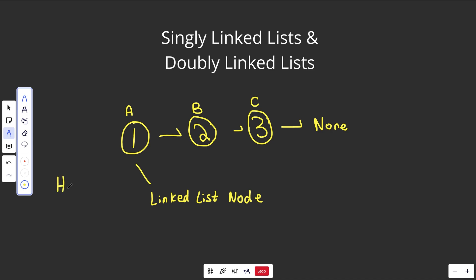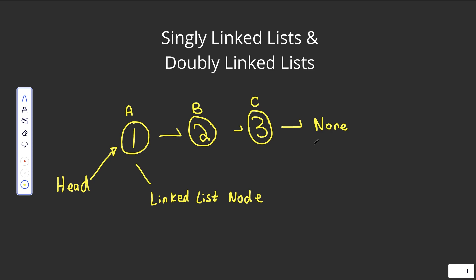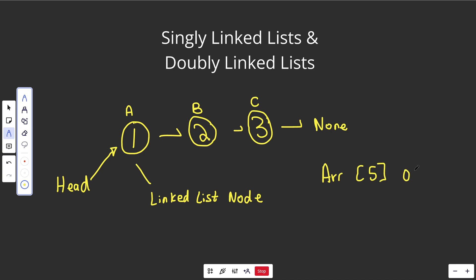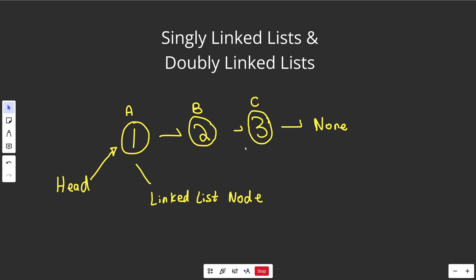Generally you would have some sort of reference to the head of the linked list, which is the front of it. Given this reference to the head, we can basically go through the list until we hit None. This is an alternative way to store data compared to an array, where an array — if you ask what is at index 5 — would tell you in O(1) time. But that's not a thing for a linked list. You can't say what is at the index; these things don't have indices. Generally all you're given is the head, and to find any element you'd have to traverse the list.